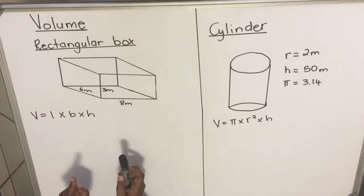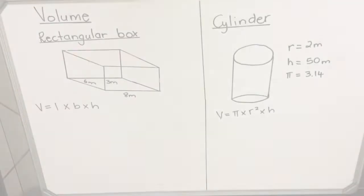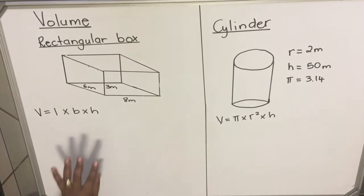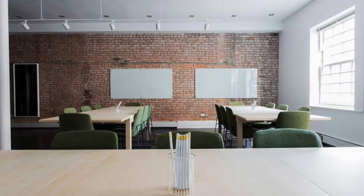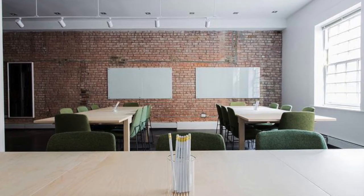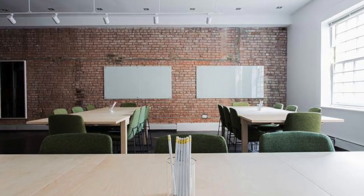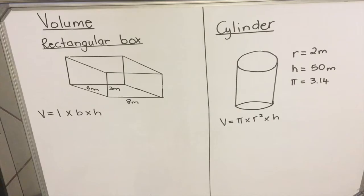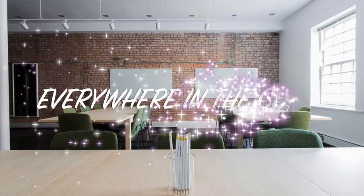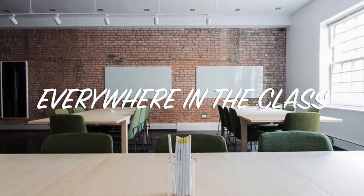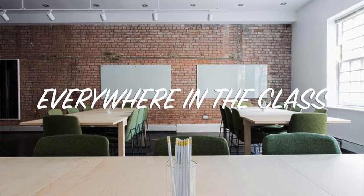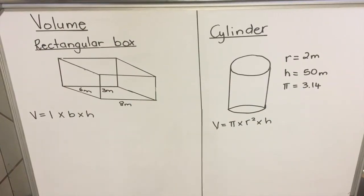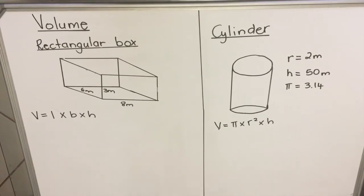We're going to start with a rectangular box. Let me explain volume with an analogy. Let's say you are in a classroom. The floor, the ceiling, and the walls — that would be your surface area. And then the volume is all the space in the classroom, everywhere. That's your volume. So when we are calculating volume, we are calculating the space inside the box — the space that the box takes.